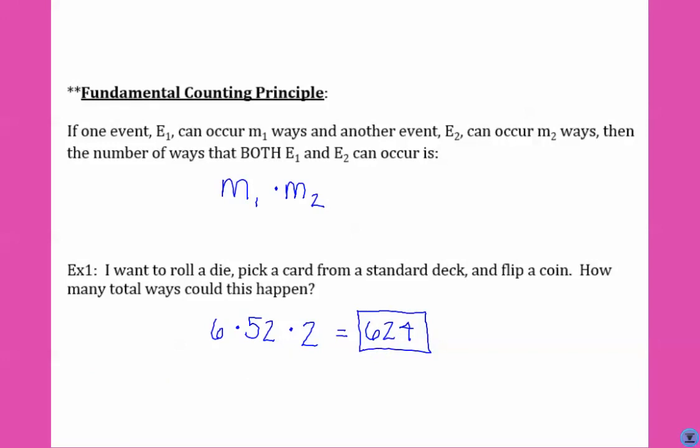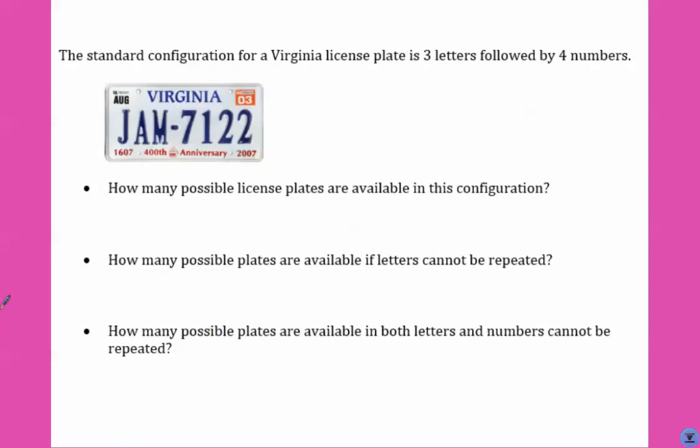So let's look at a license plate. The standard configuration for a Virginia license plate is three letters followed by four numbers. So how many possible license plates are available? Well, for the first letter, we have 26 options, and 26 options for the second letter, and 26 options for the third letter. Then for the digits, remember you can have zero through nine, which means there's 10 options for the first, second, third, and fourth numbers in the license plate. If you multiply that together, you get 175,760,000 license plates.